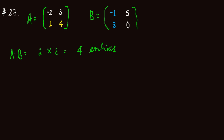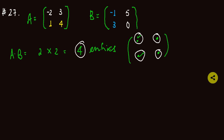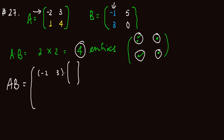The first entry is the dot product of the first row of matrix A with the first column of matrix B. The first row of matrix A is minus 2, 3, and the dot product with the first column of matrix B, which is minus 1, 3, gives: minus 2 times minus 1 is 2, plus 3 times 3 is 9. So you get 11 for the first entry.